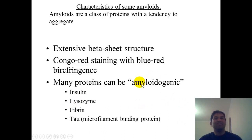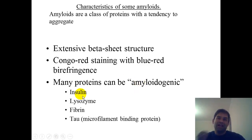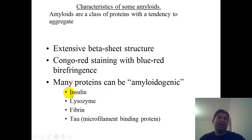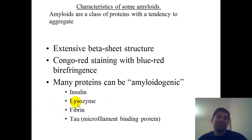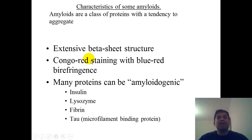That's a protein folding problem that is worrisome, because Chris Dobson at Cambridge was actually able to get insulin and lysozyme to form amyloid plaques. Under the right conditions, you can get almost anything to form amyloid. So to summarize, the three properties of amyloid are: beta sheet structure, Congo red staining, and blue-red birefringence.